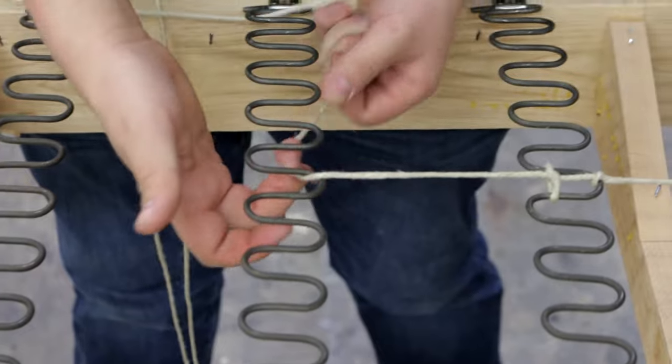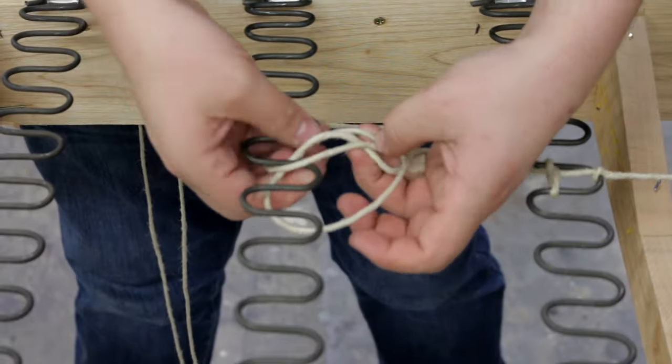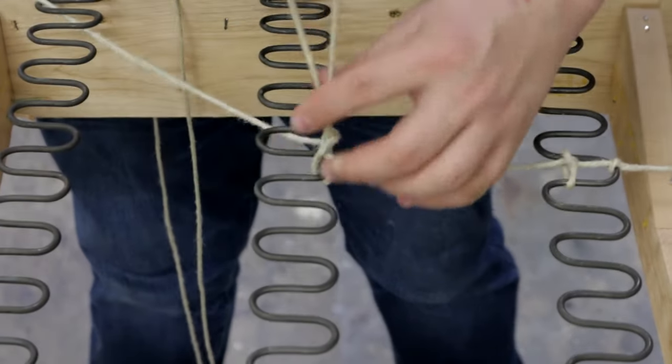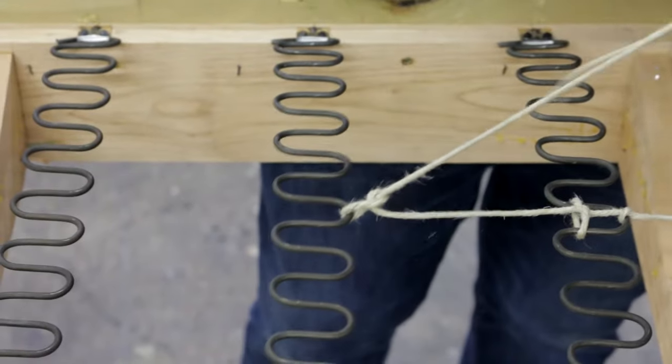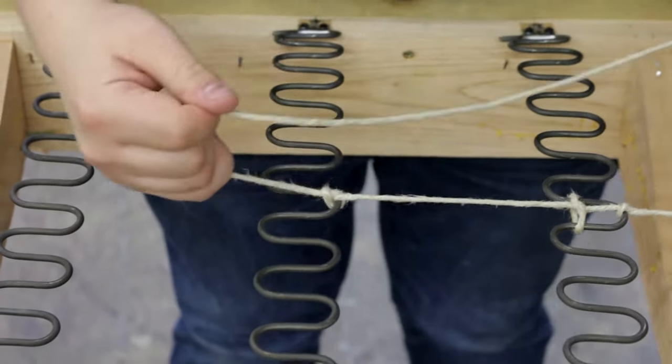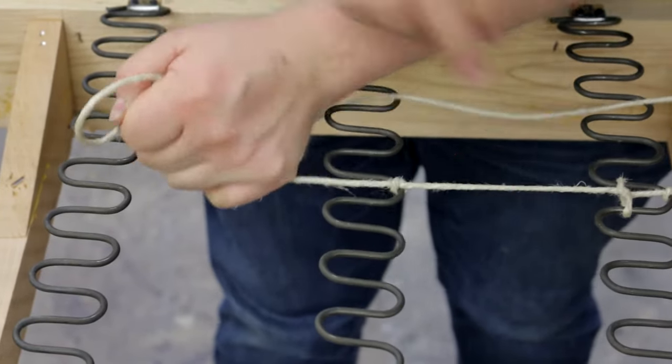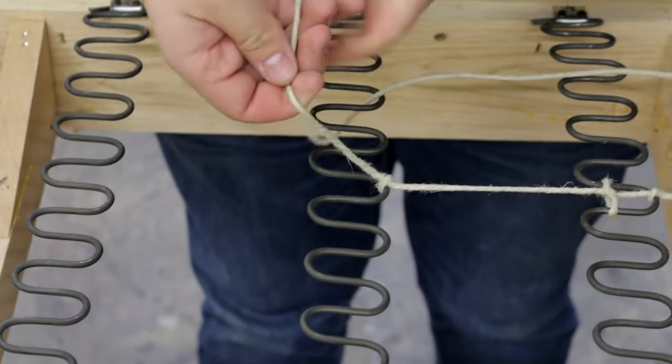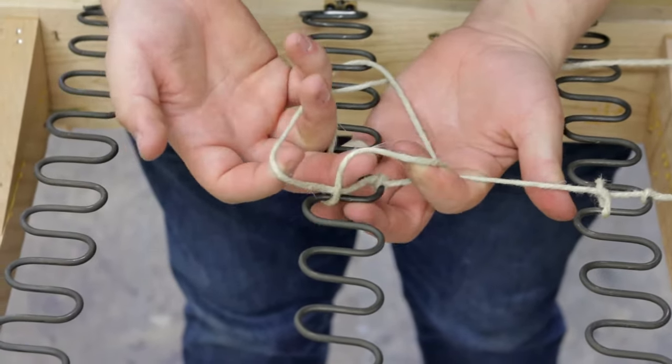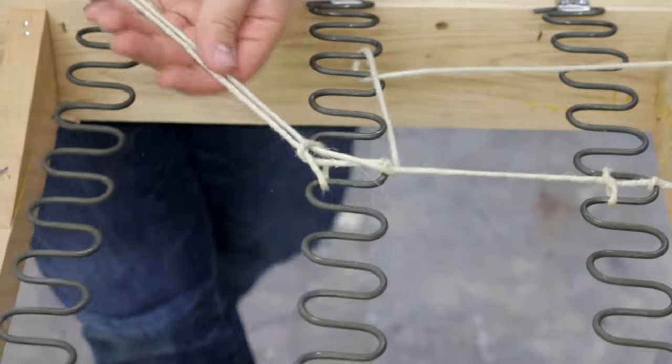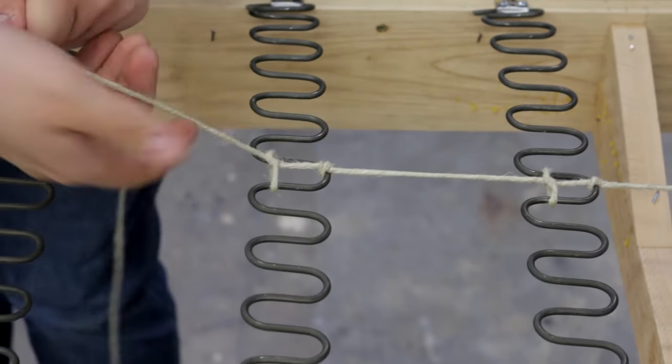So the first knot will just be a really basic knot over, under, and through to secure it to the spring. Make sure to pull all your excess through just to not have it in the way. Then you'll pull the string back and forth, making sure to put some tension into the string and making it taut, but not pulling the springs too far in either direction. Take the string in your right hand, wrap it over your first and third finger in your left, under the spring, and grab it with your middle finger to pull it through. And then you'll just repeat.